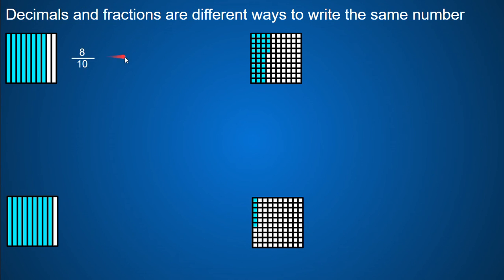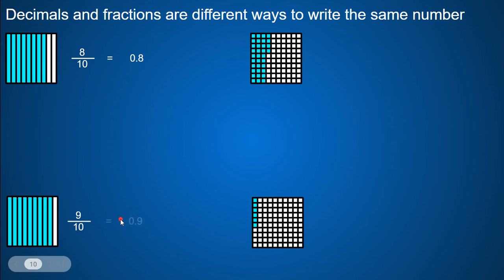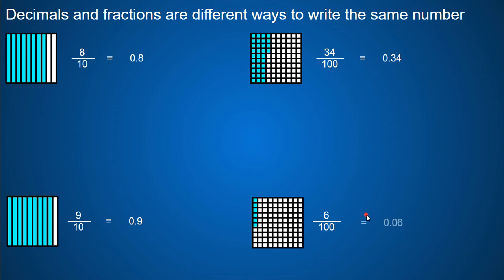Whenever we have a fraction, our decimal is read the same exact way. So this is eight tenths — our decimal is read the same exact way: eight tenths, one digit after the decimal point because I'm with tenths. Here's another tenths fraction — it's going to be one digit after the decimal point: nine tenths and nine tenths, one digit after the decimal point. We have hundredths with these, so there are going to be two digits after the decimal point. So thirty-four hundredths, and that as a decimal is zero and thirty-four hundredths, two digits after the decimal point. And with this one here, I have six hundredths and the decimal of that is zero and six hundredths. Notice there are two digits after the decimal point, and when I read that it says six. So the six is in the hundredths place because it is six hundredths. If the six was in the tenths place with a zero after it, that would be read as sixty hundredths.